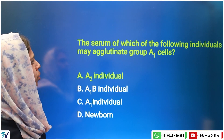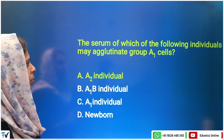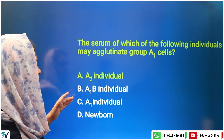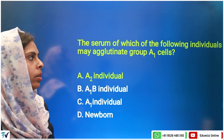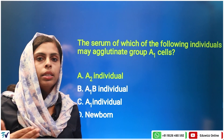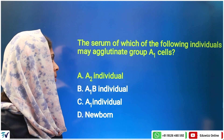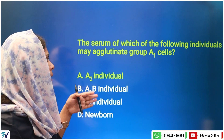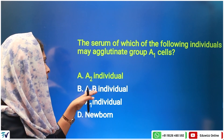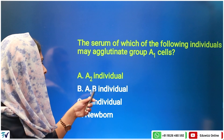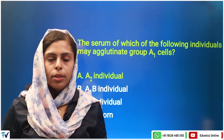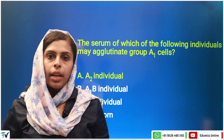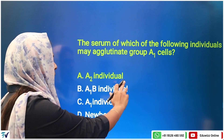The serum of which of the following individuals may agglutinate group A1 cells? A1B individual and A1 individual newborn will not have anti-A1. An A2 individual's serum contains anti-A1 antibody. So the answer is A2 individual.